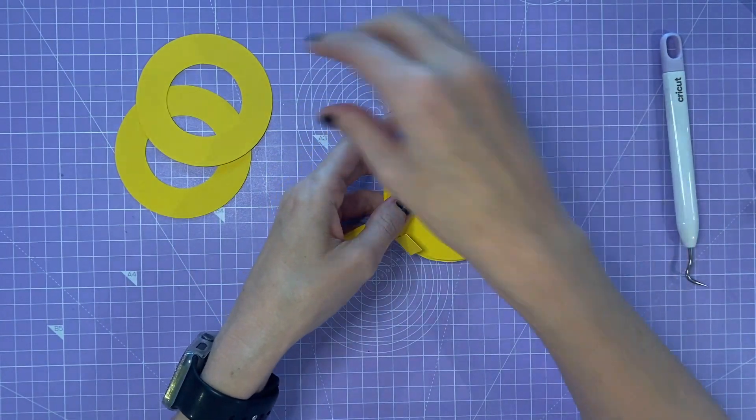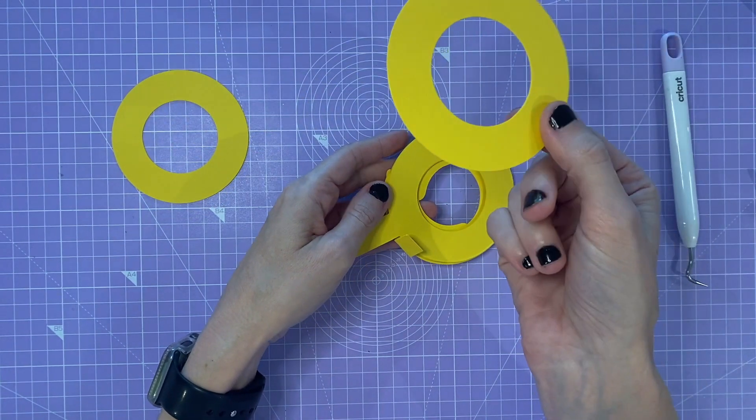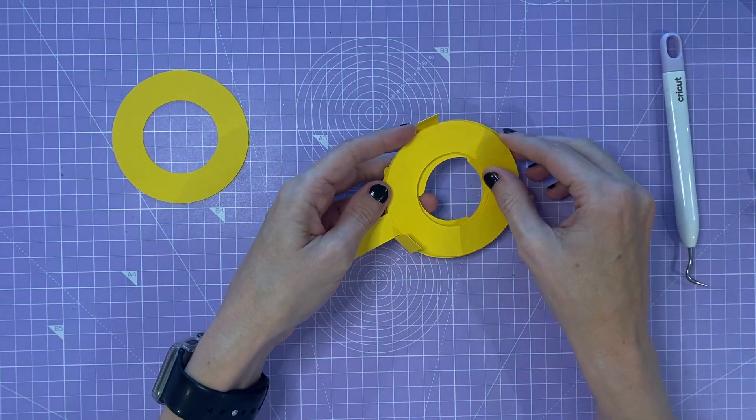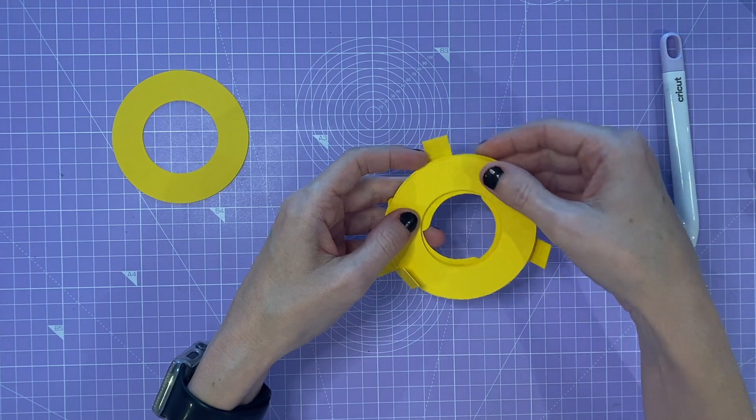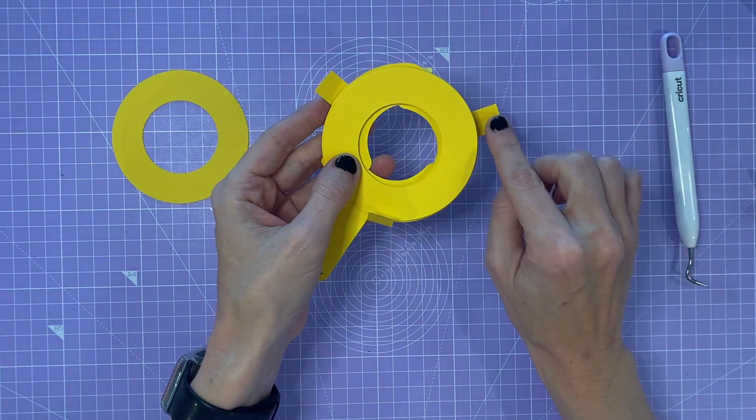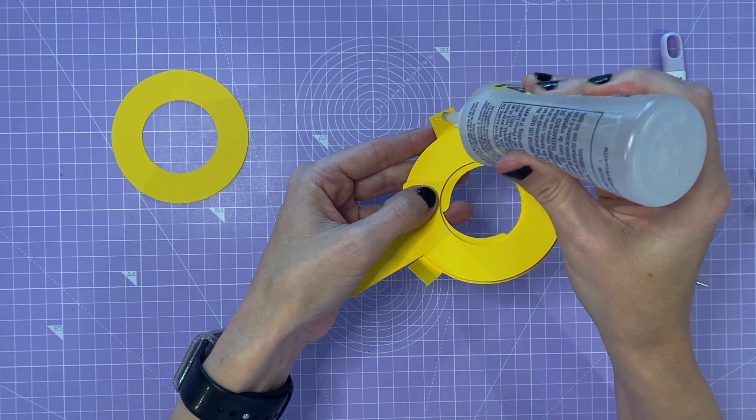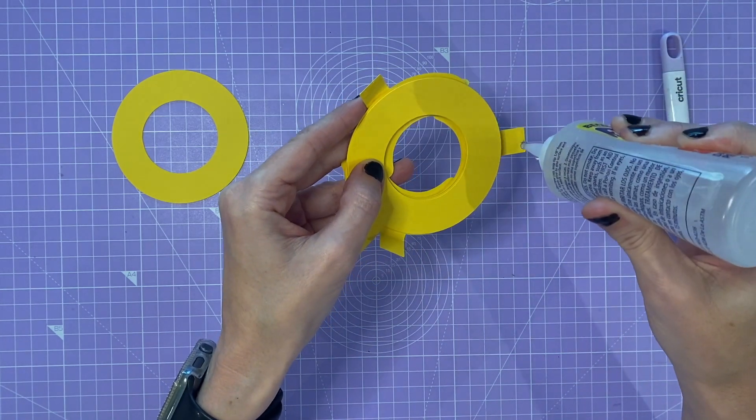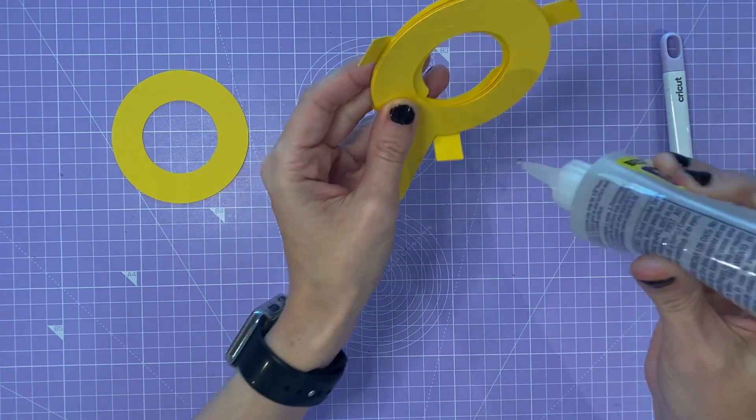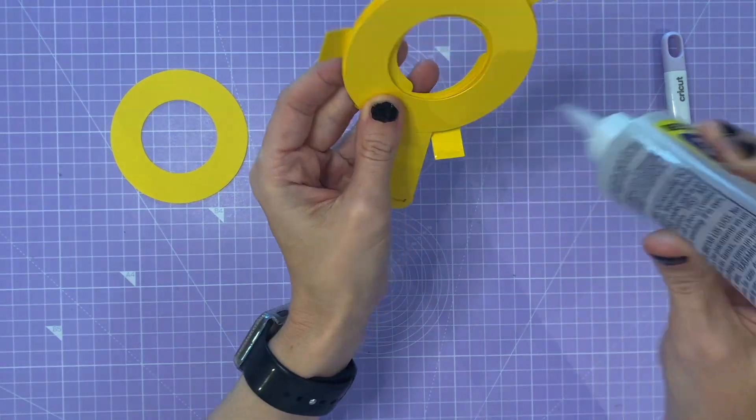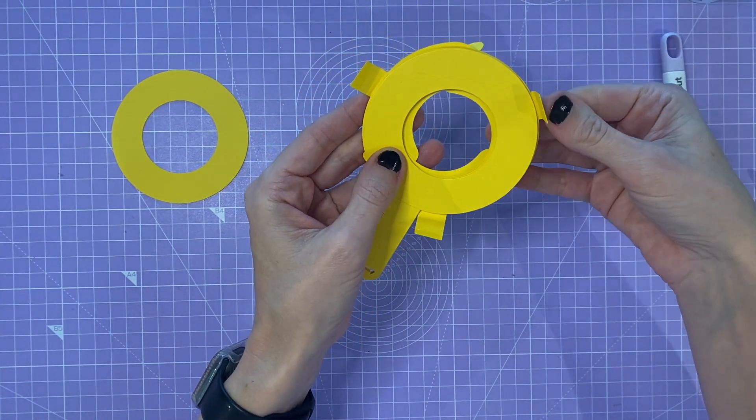Then I'm going to take one of the circles and place it there. And then I'm going to put glue just along these edges, just at the edge, and then I'll fold them in.